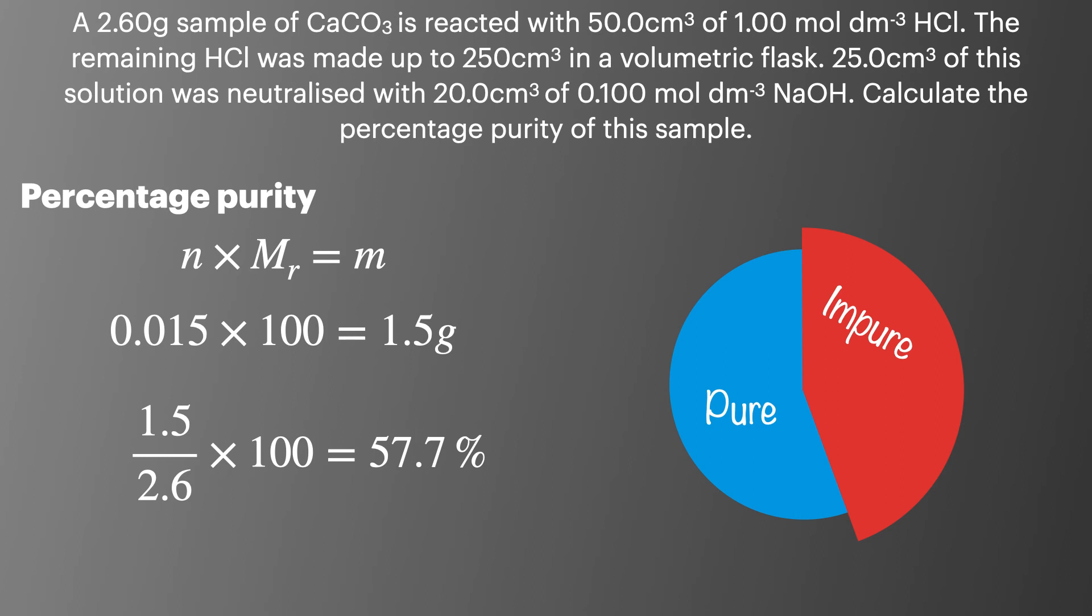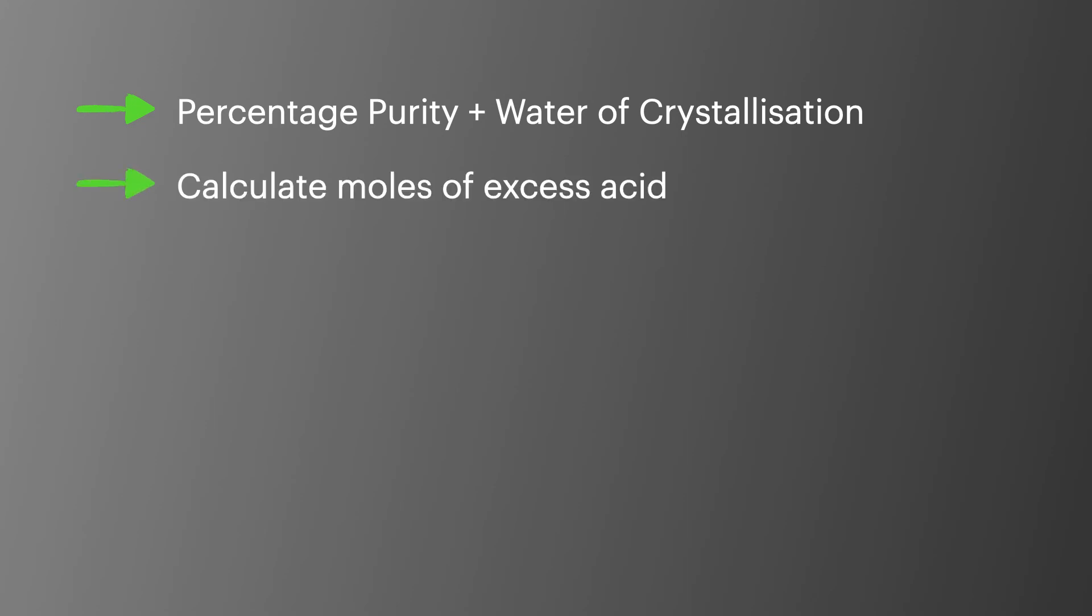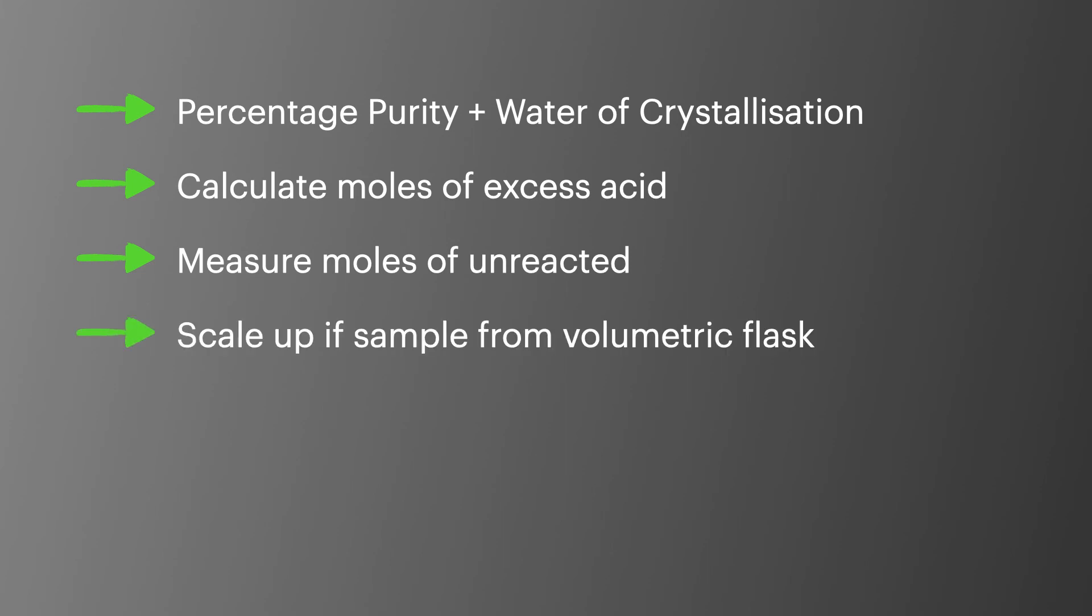To summarize, we often see exam questions where we're asked to calculate percentage purity or water of crystallization using a back titration. To start you must calculate the moles of excess acid. Then measure the moles of unreacted using a titration. Don't forget to scale up your values if you're using a sample from a volumetric flask. Calculate your moles of reacted and then use this value to calculate the moles of your unknown.